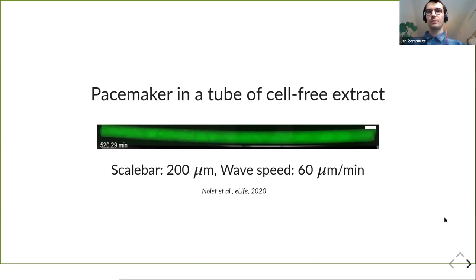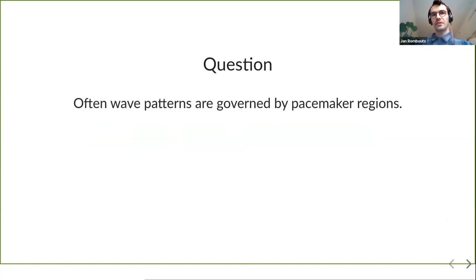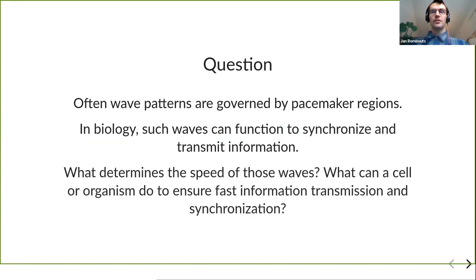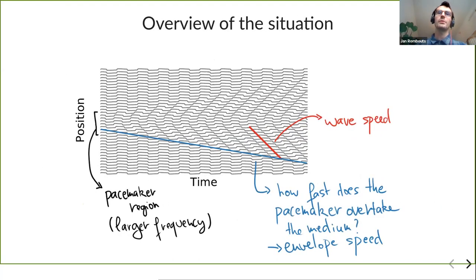For the rest of my talk I want to discuss a question about these waves. Often the waves come from somewhere — often from pacemaker regions in biological systems. These waves can have a function, for example to transmit information. A natural question is: what determines the speed of these waves? This is the question I will address. From now on it will be a little more modeling and physics-oriented.